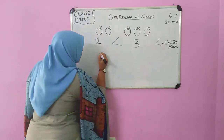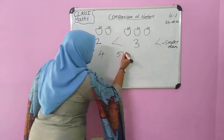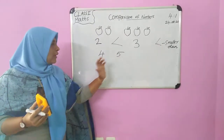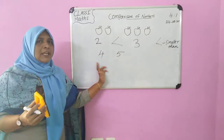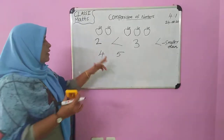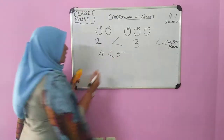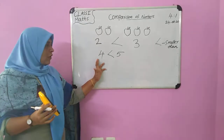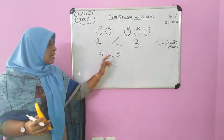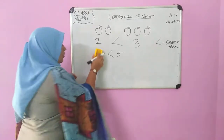Which number is this — four? Which number is this, children — five? Which is the greater number? Five. Which is the smaller number? Four. Which symbol do we denote here? This symbol means four is smaller than five.